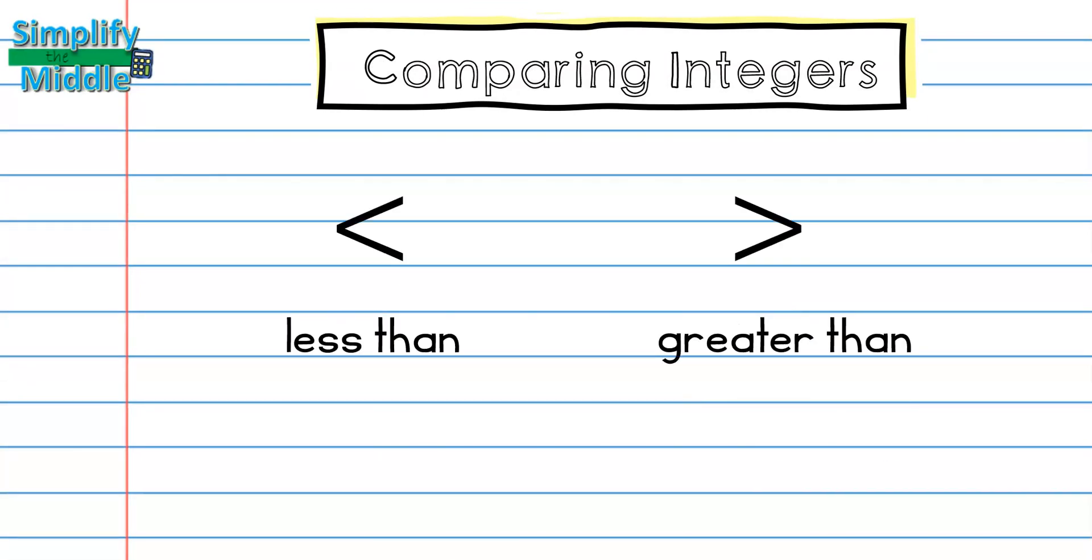First, let's review some comparison symbols and what they mean. This symbol right here means less than. We know that when we have a number sitting right here and we see this symbol, we read it as that number is less than this number. This is our greater than symbol. We know if we have a number sitting right here and we see this symbol, that this number is greater than this number.